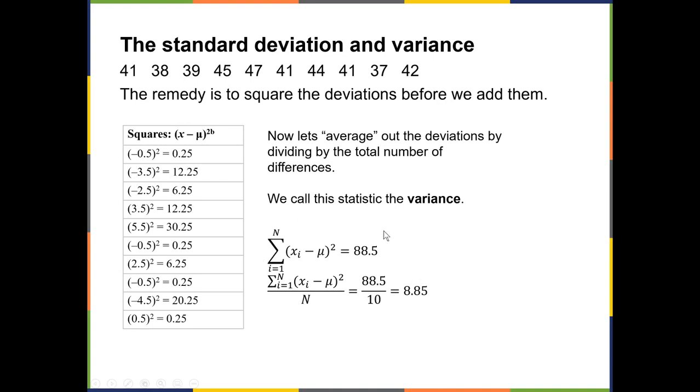So here's our sigma notation. What I did was, each data point minus the mean squared and add them all up, we get 88.5. To make it an average, we're going to divide by the total number of values in the data set. That was 10. So the average is 8.85, all right? So the variance is 8.85.